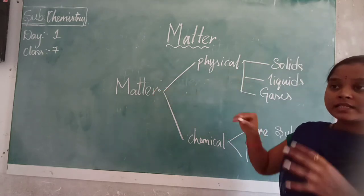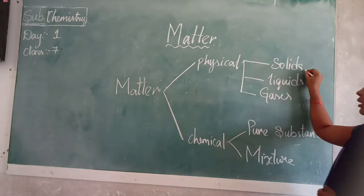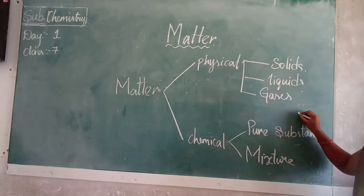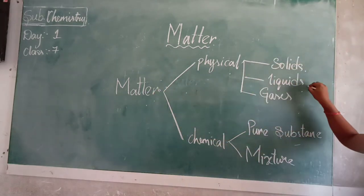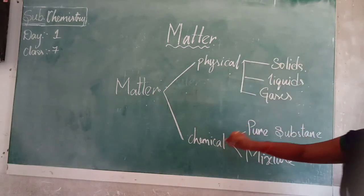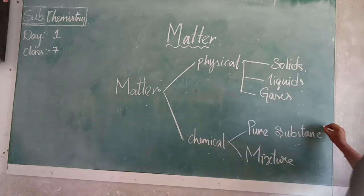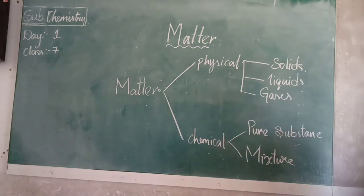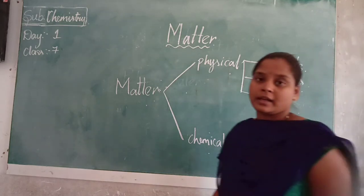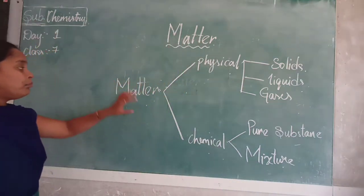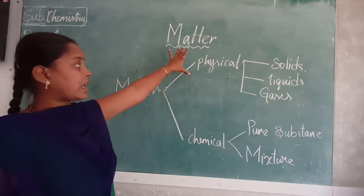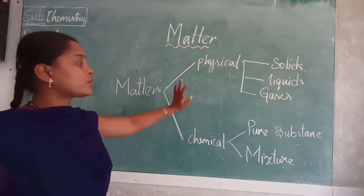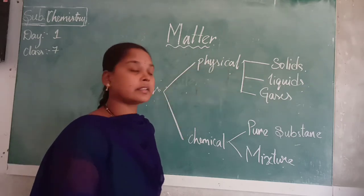Chemical characteristics are nothing but they have two types - pure substance or mixture. So here, matter - by seeing we can say it is either solid, liquid or gaseous. That means the physical structure of the matter says it is either solid, liquid or gaseous. The chemical characteristics of the matter say either it is a pure substance or a mixture. Pure means which is made up of only one element, one atom. Mixture is which is made up of one or more atoms.